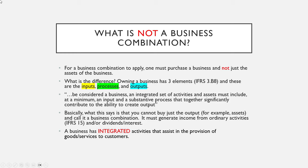Owning a business in accordance with IFRS 3.B8 has three elements: the inputs of the business, the processes of the business, and the outputs of the business. To be considered a business, an integrated set of activities must include, at a minimum, the input and substantive processes that significantly contribute to the production of an output. You can't just buy the output — the asset — and call it a business combination. You must be able to purchase the income from ordinary activities, have dividends, and have means for producing goods or services to customers.